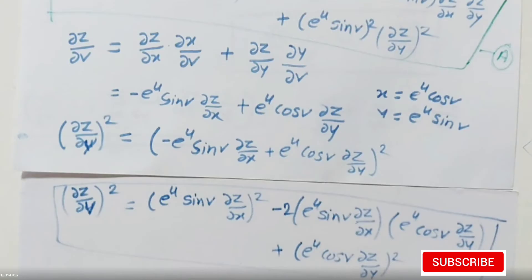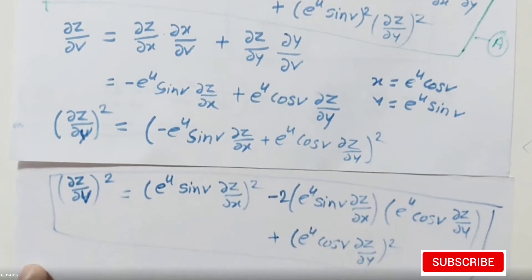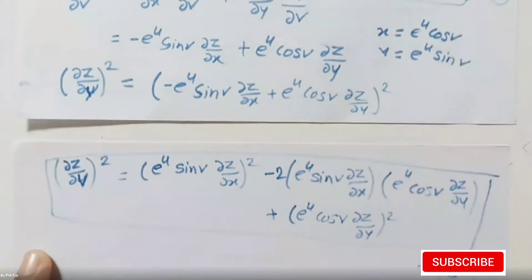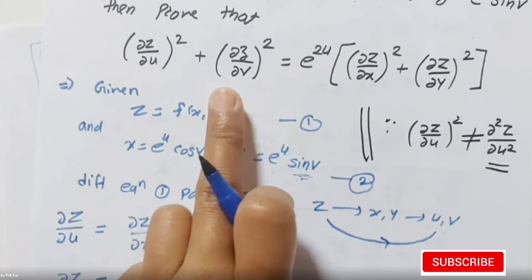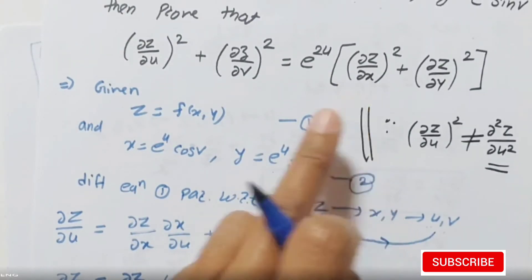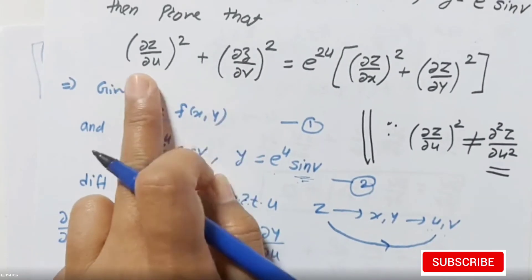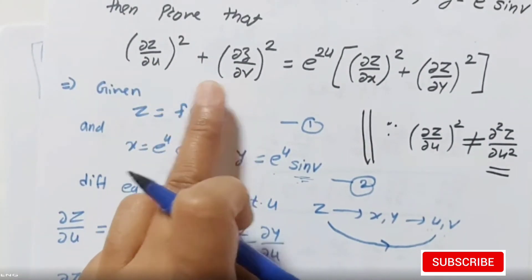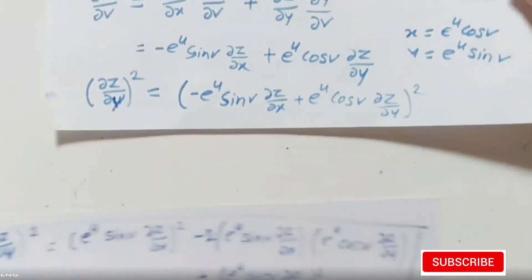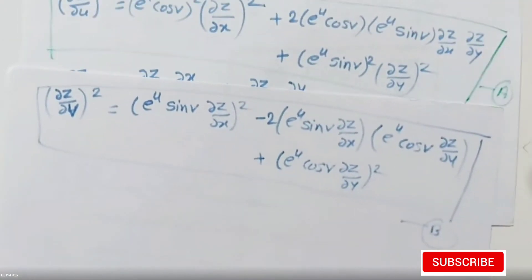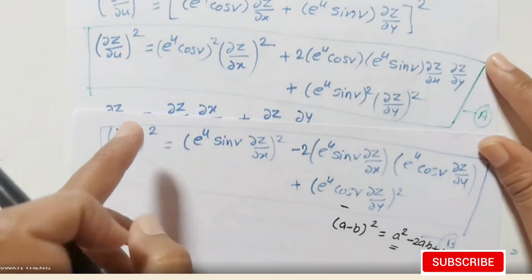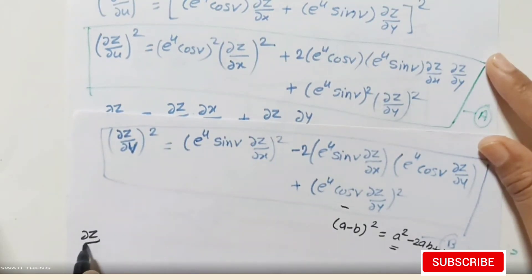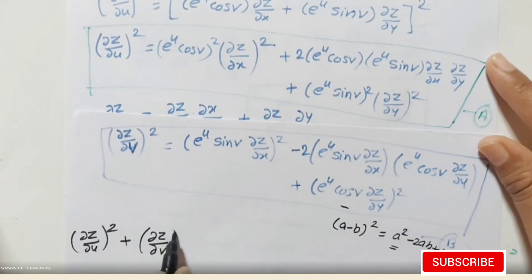In the next step we add equations (A) and (B) as required by the proof. Adding the left-hand sides gives (∂z/∂u)² + (∂z/∂v)². Now on the right-hand side, looking at the first terms: the middle terms are exactly the same but opposite in sign — one is +2ab and the other is −2ab — so the second terms cancel out and go to zero when we add.